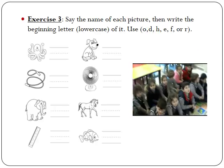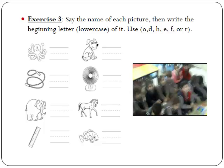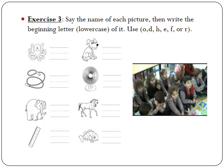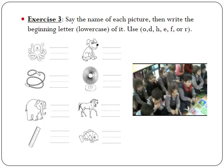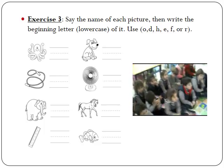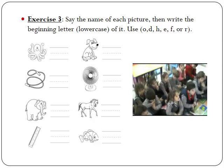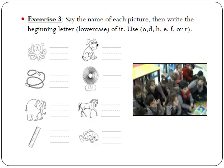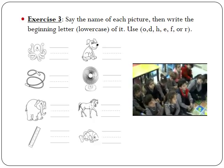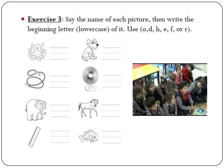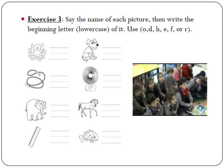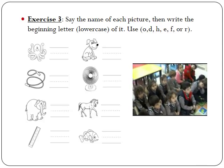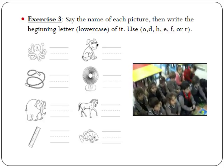Let's move to exercise number three. We have to say the name of each picture, then write the beginning letter of it. We have to use the letters O, D, H, E, F, or R. Okay, let's see.